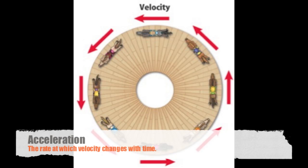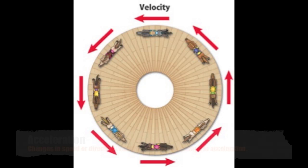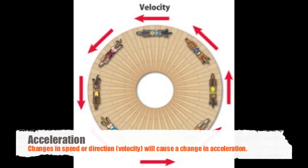Acceleration is the rate at which velocity changes with time — it measures how fast or slow velocity is changing. Because acceleration has to do with velocity, which has size and direction, anytime you change your speed or your direction you are changing your velocity, and anytime you are changing your velocity, you are accelerating. For example, horses on a carousel travel at a constant speed, but because their direction is constantly changing, their velocity is changing, so they are constantly accelerating.